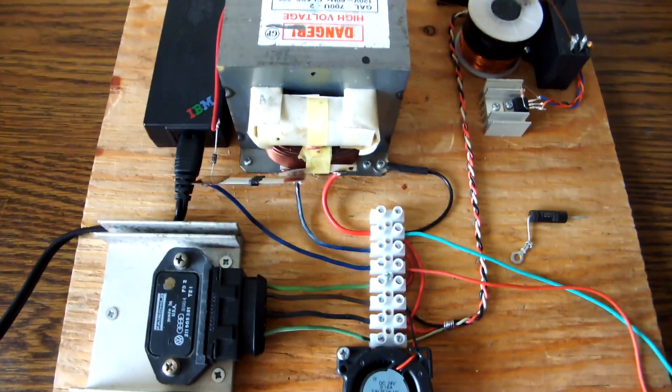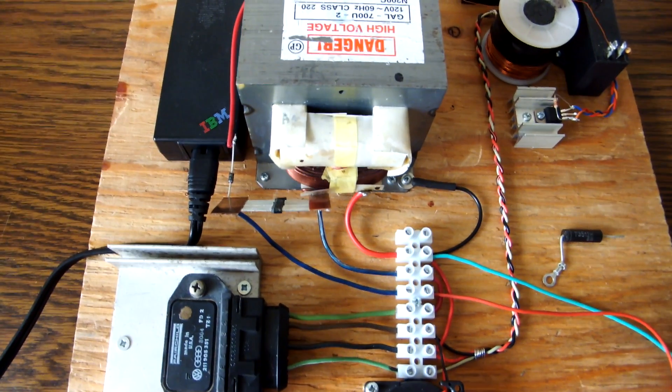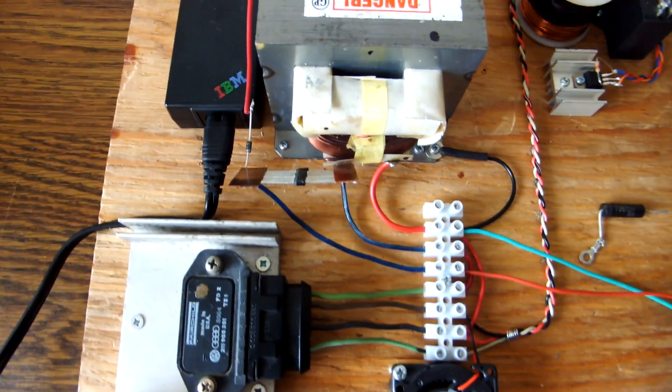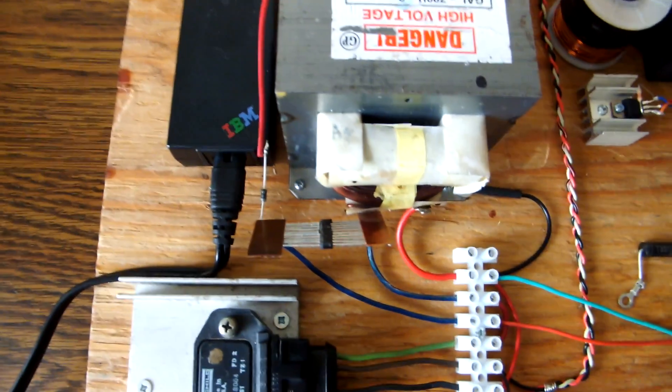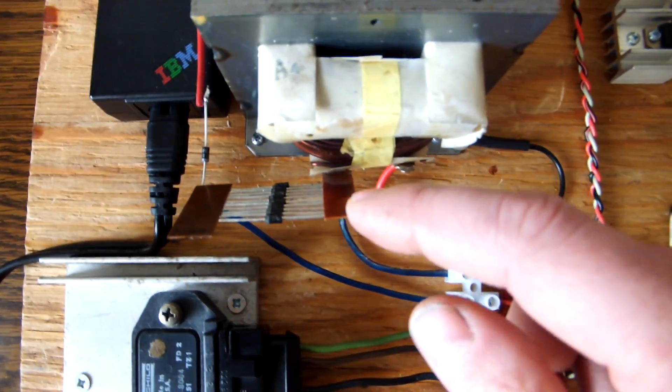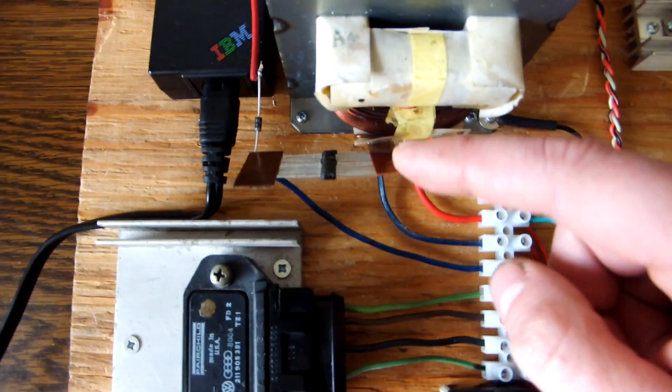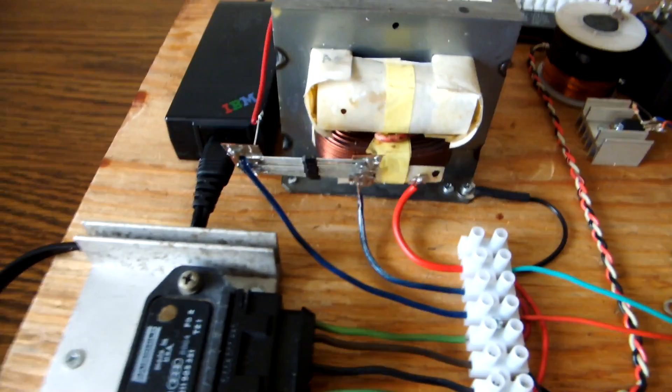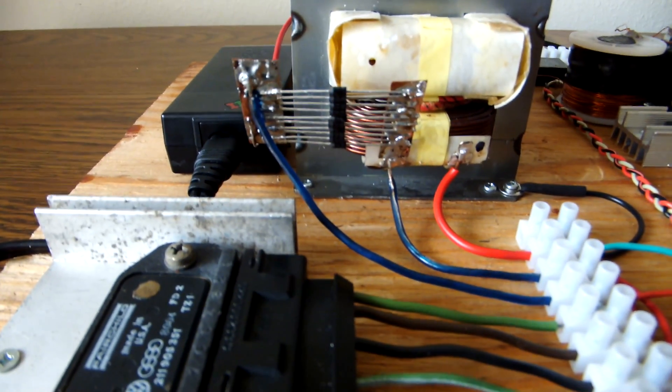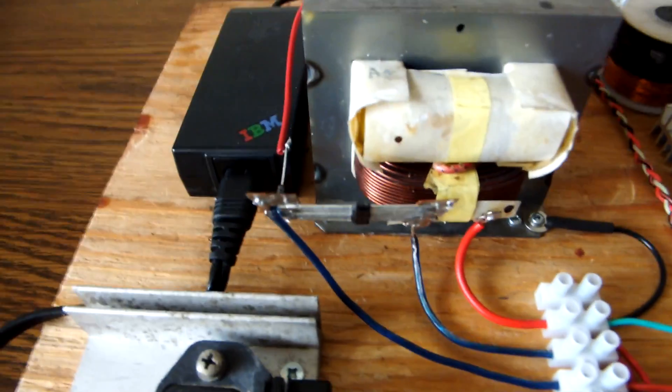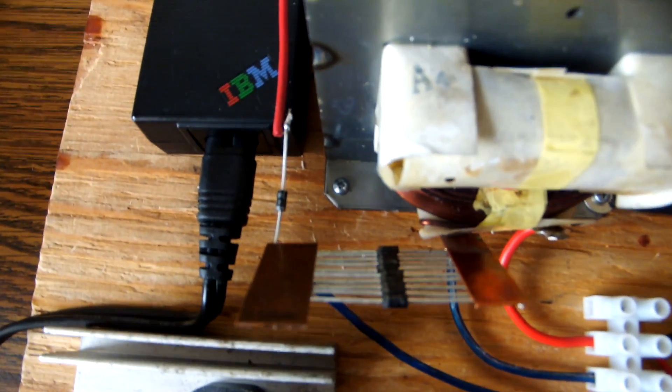So what I'm using are UF 4007 diodes, and those are an ultra-fast switching 1000 volt diode. So the diode is good, but they are too small. What I did is I added 10 diodes in parallel here, and they're soldered to copper bars. It's not the easiest thing to do, the solder is very bulky, so there's 10 diodes there in parallel.